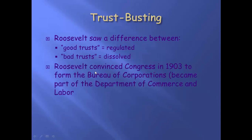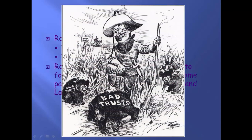Roosevelt also convinces Congress in 1903 to form the Bureau of Corporations, which will later become the president's cabinet position, the Department of Commerce and Labor. There's an image of Teddy — bad trusts, he's going to shoot them, he's going to break those companies up. Good trusts, you see he's got a little restraint on there — he's going to keep an eye on them.